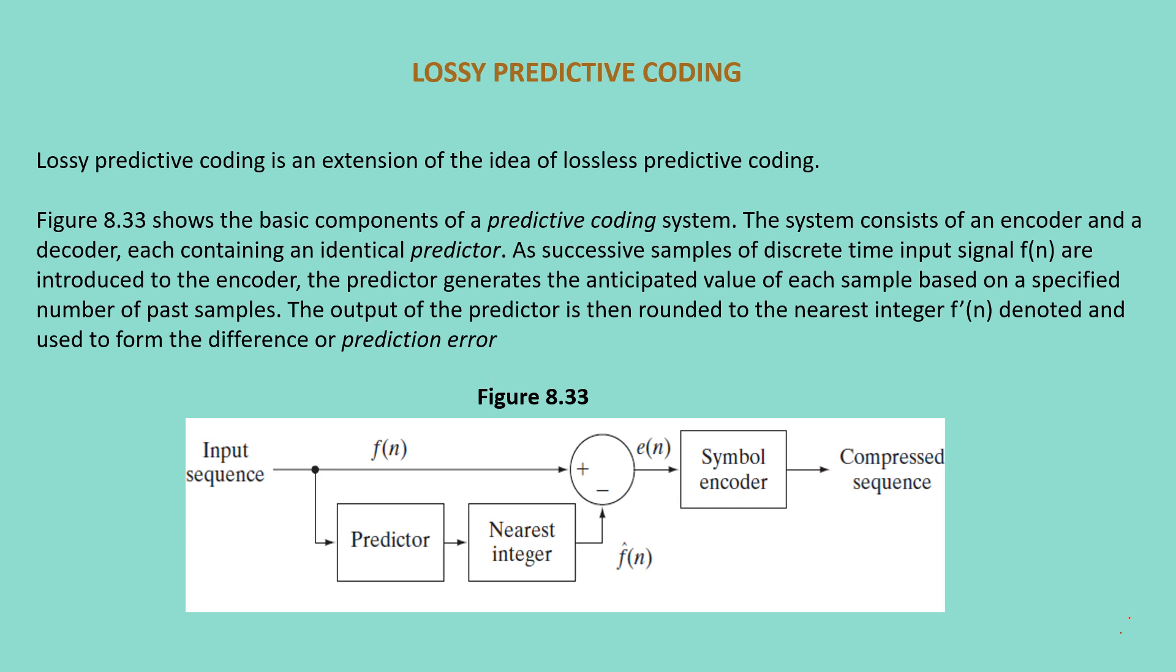Lossy predictive coding is an extension of the idea of lossless predictive coding. Figure 8.33 shows the basic components of a predictive coding system. In this figure, we can see that there is a symbol encoder which also consists of a predictor. As successive samples of the display time input signal f are introduced to the encoder, the predictor generates the anticipated value of each sample based on a specific number of past samples. The output of the predictor is then rounded to the nearest integer f', which is denoted as f', and it is used to form the difference or prediction error.